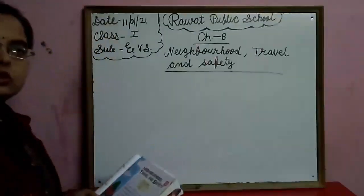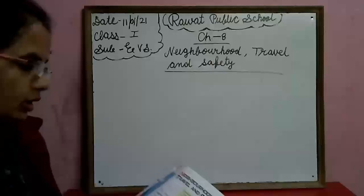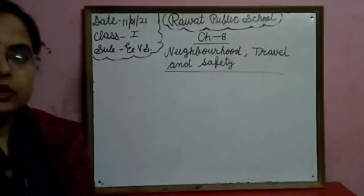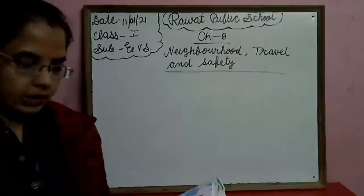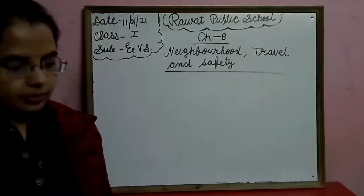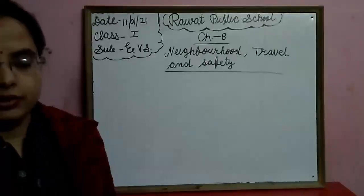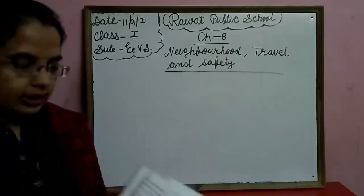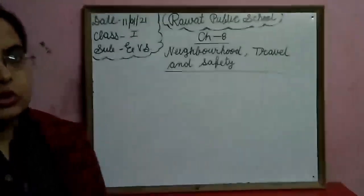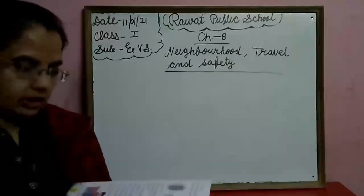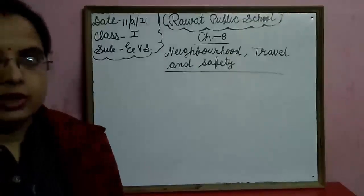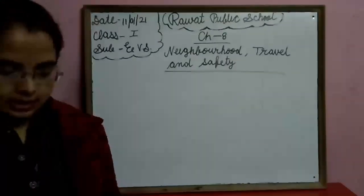So today we will continue this chapter. हमने यह chapter पढ़ लिया था — Neighborhood पढ़ लिया था, कौन-कौन से neighborhoods होते हैं, places कौन-कौन से होते हैं हमारे चारों तरफ। और Travels पढ़ लिया था — people who help us in different ways। Three main means of transport: land, water and air।